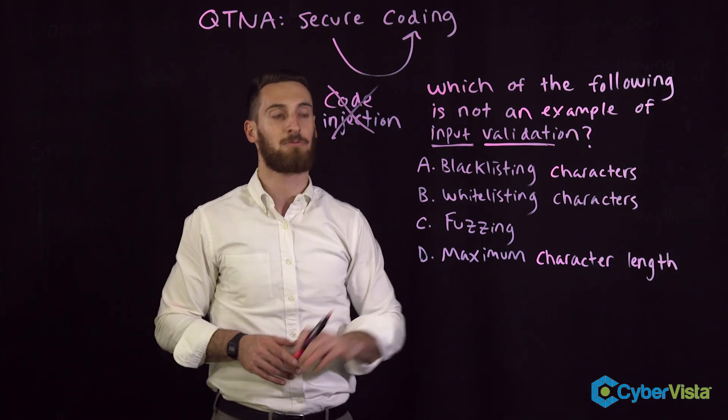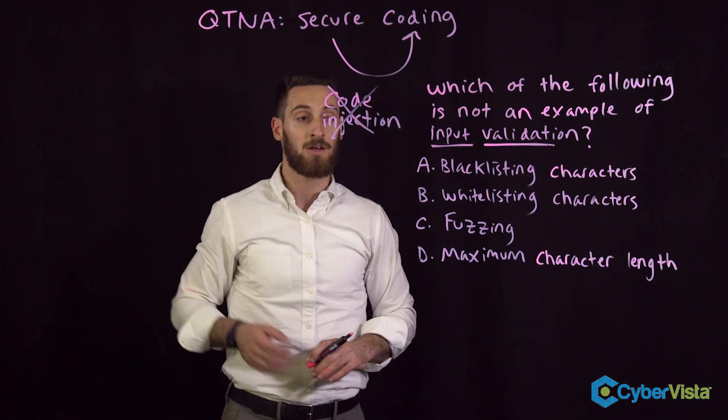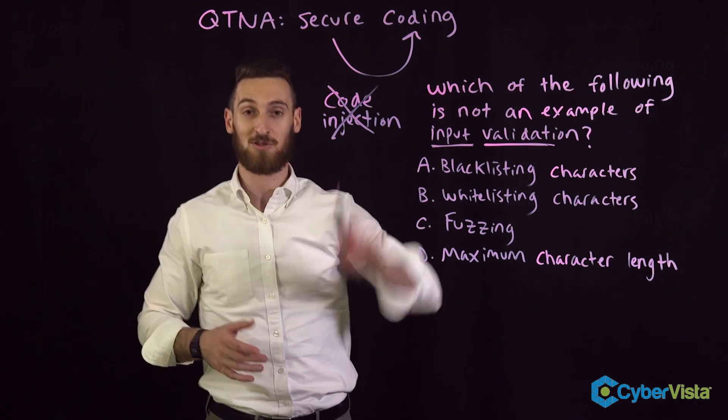Let's look at this list and find out which one of these are examples of input validation. Starting with the first one, blacklisting.